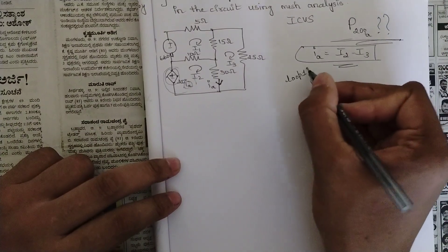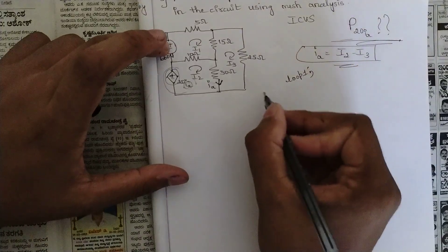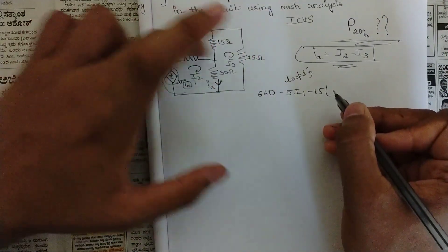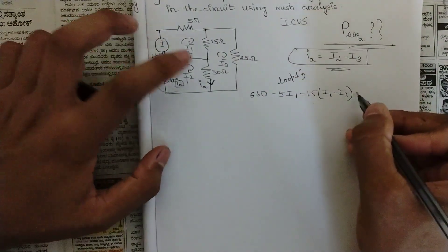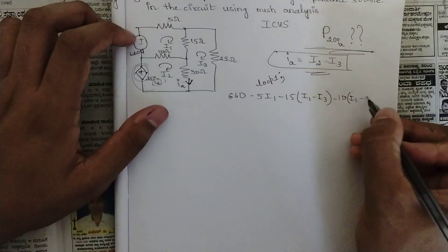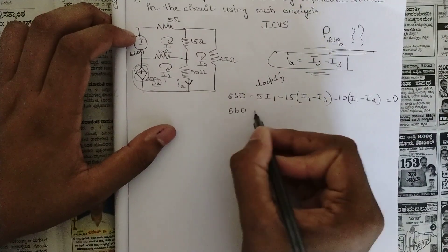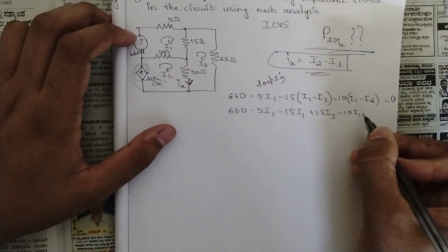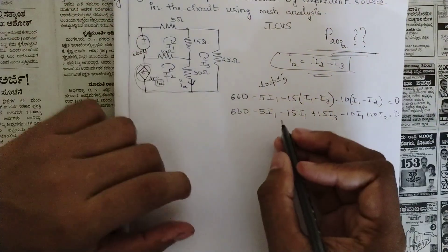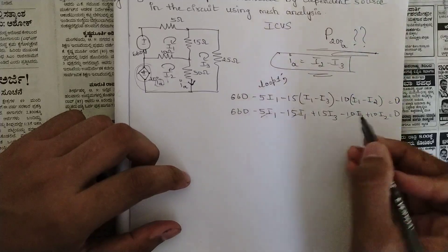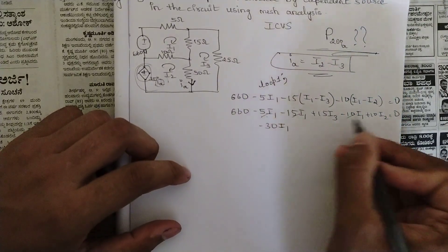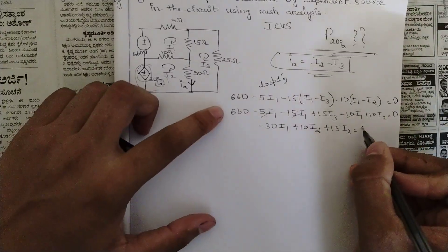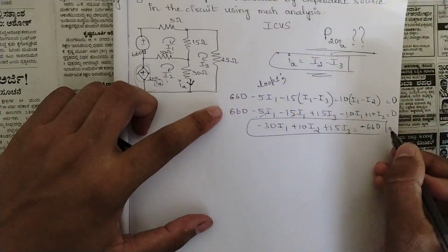Apply KVL on loop 1. The outgoing source is 660V. Then minus 5i1, then minus 15(i1 − i3) since the 15-ohm is between i1 and i3, then minus 10(i1 − i2) equals 0. Expanding: 660 minus 5i1 minus 15i1 plus 15i3 minus 10i1 plus 10i2 = 0. Grouping i1 terms: 5 + 15 + 10 = 30, so minus 30i1. Equation 1 is: −30i1 + 10i2 + 15i3 = −660.